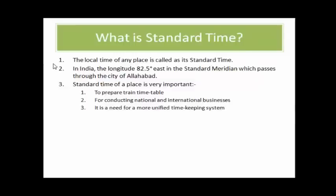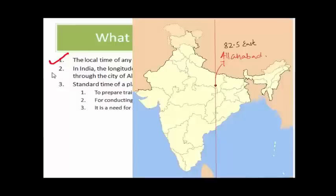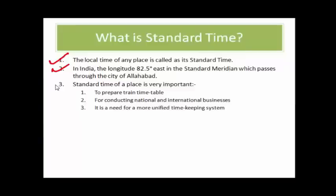Standard time refers to the local time adopted by any place. For example, India uses the Indian Standard Time. The longitude 82.5 degrees east is India's standard meridian, which passes through the city of Allahabad. Using the same calculation, 82.5 degrees equals five hours and thirty minutes, meaning India is five hours and thirty minutes ahead of Greenwich. So whatever the time in Greenwich, just add five and a half hours to get Indian Standard Time.